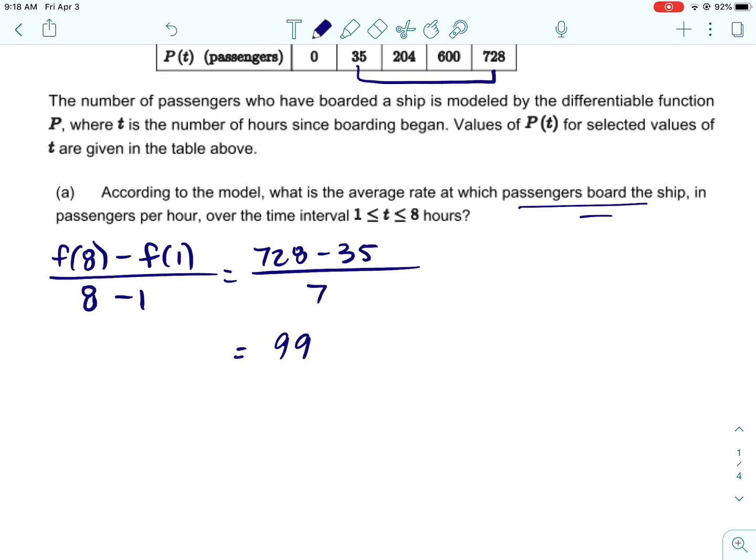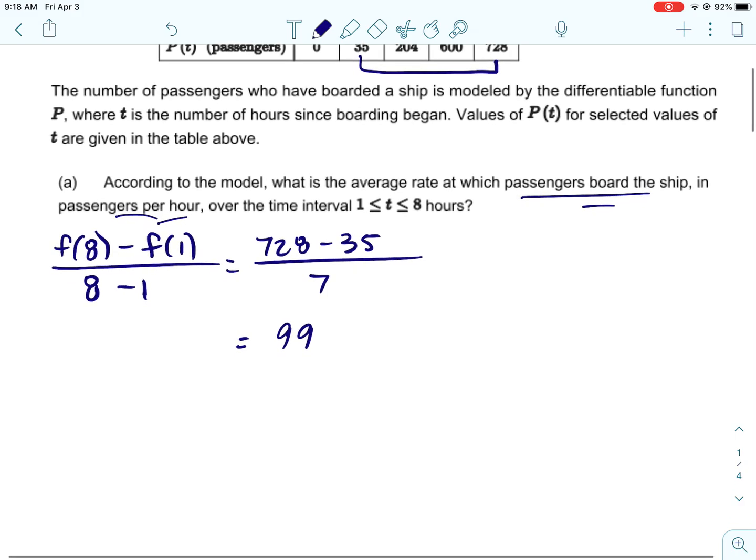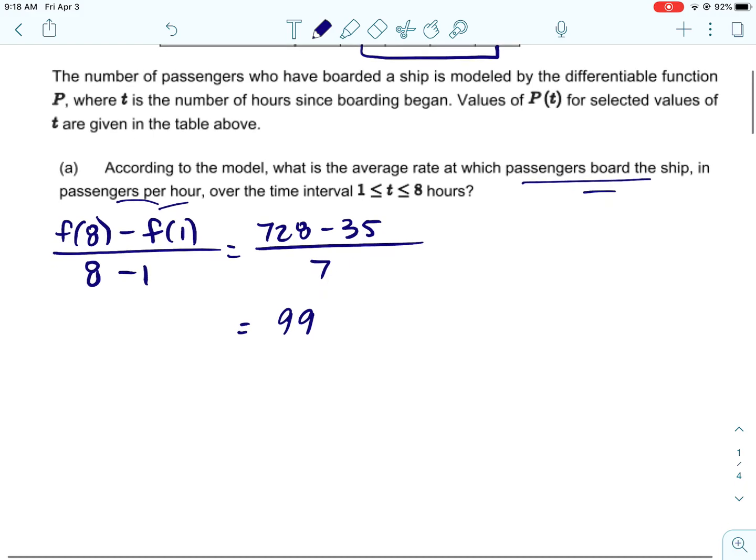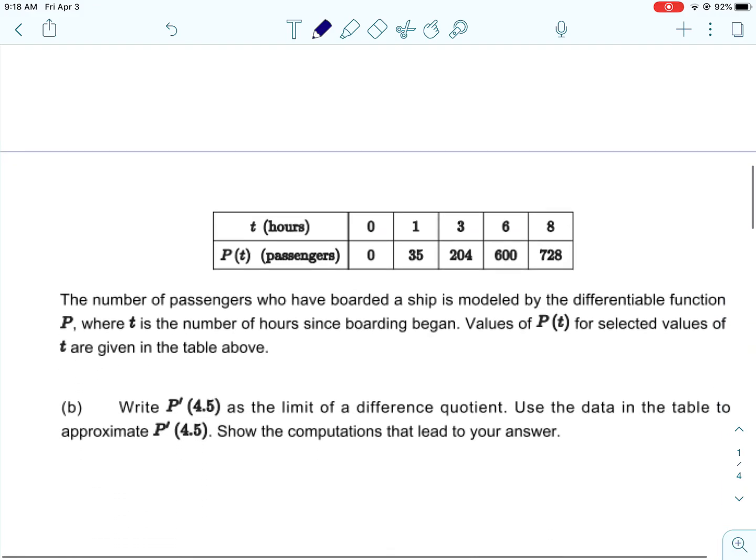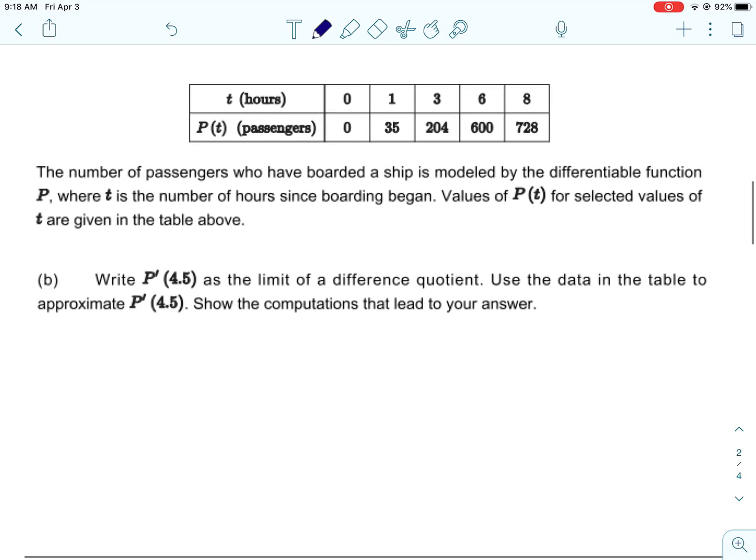Now we have a prediction. I do feel like on the actual test they would want you—they told you in this what you're finding and what it means—but I feel like they would want you to explain. Like I said, we 100% have answered the question. If you wanted to take a minute to write in what 99 is, you can.